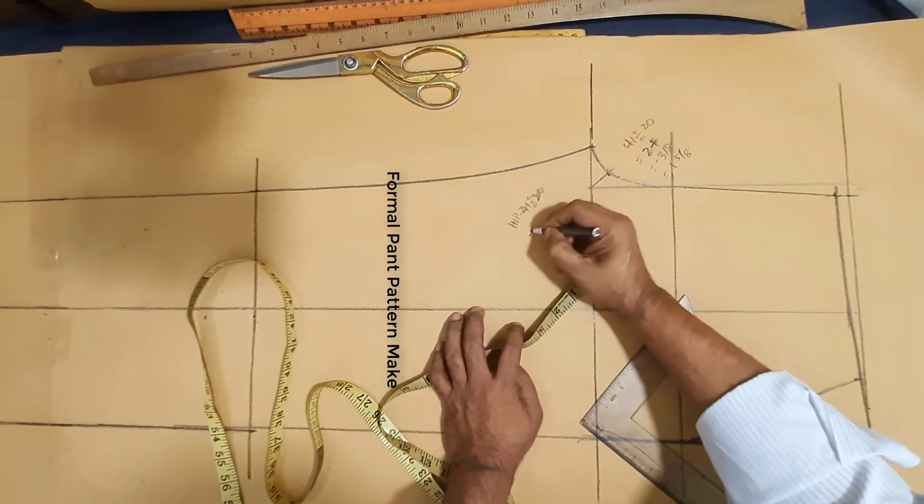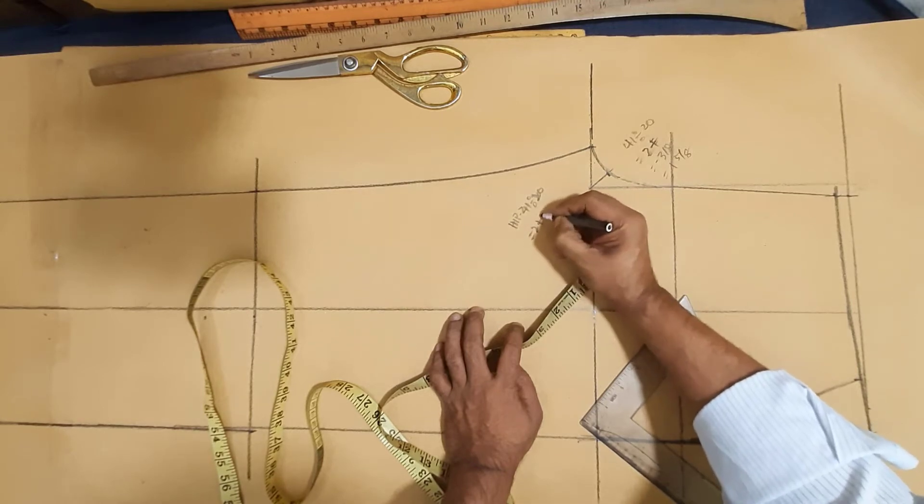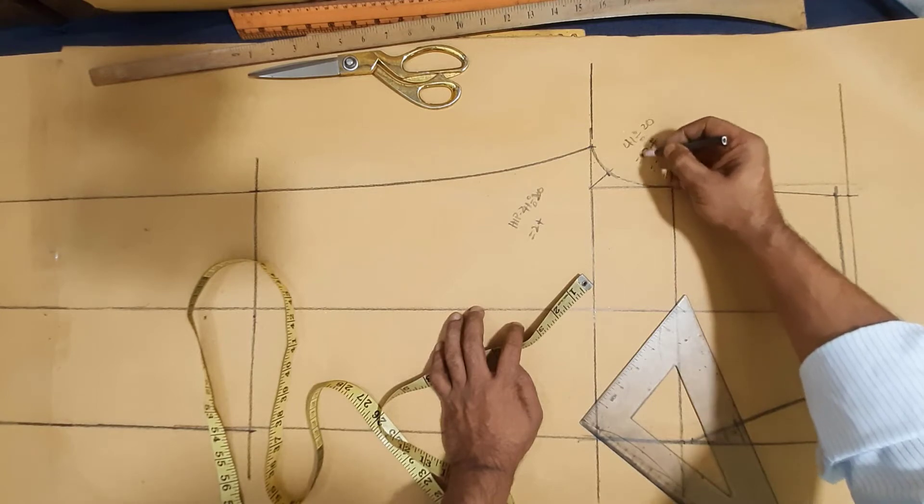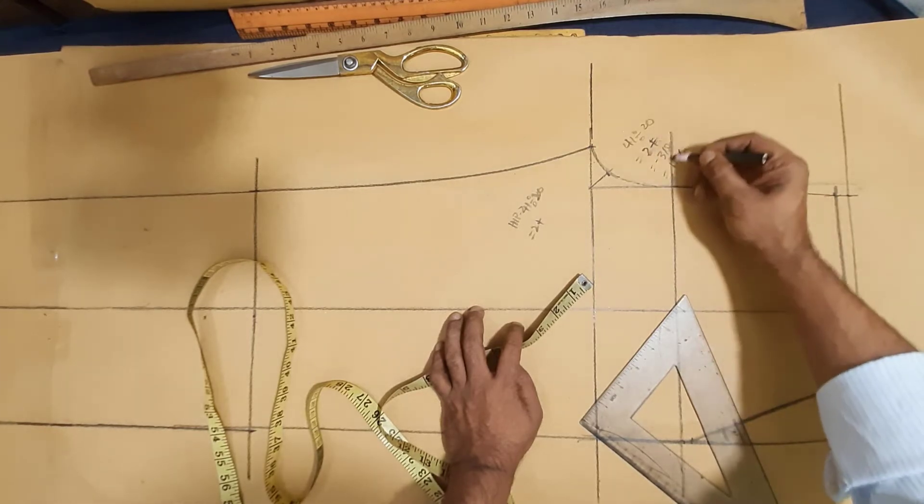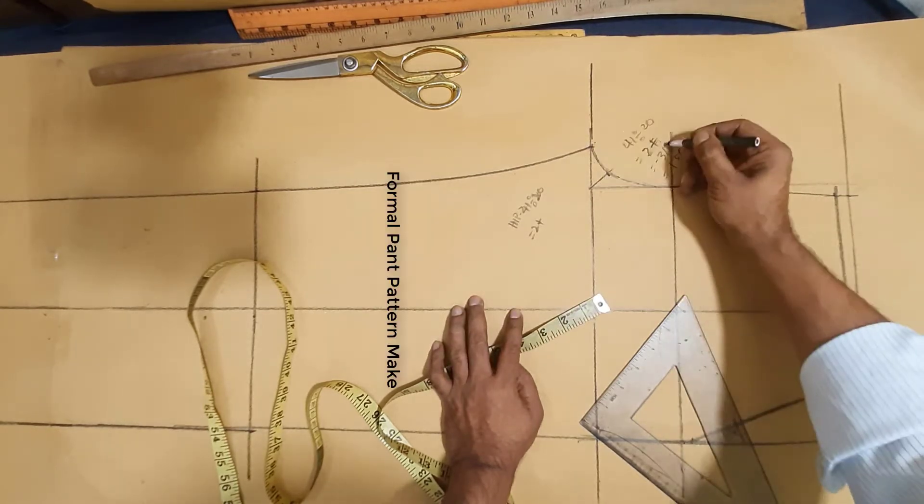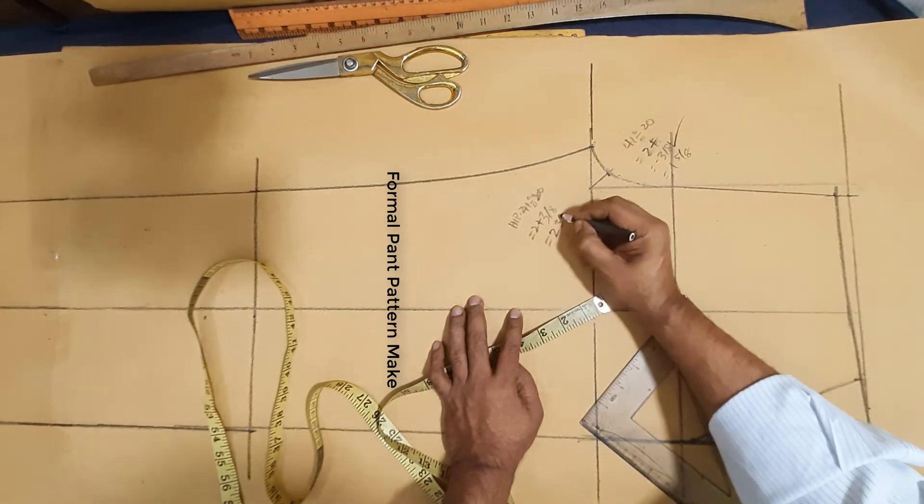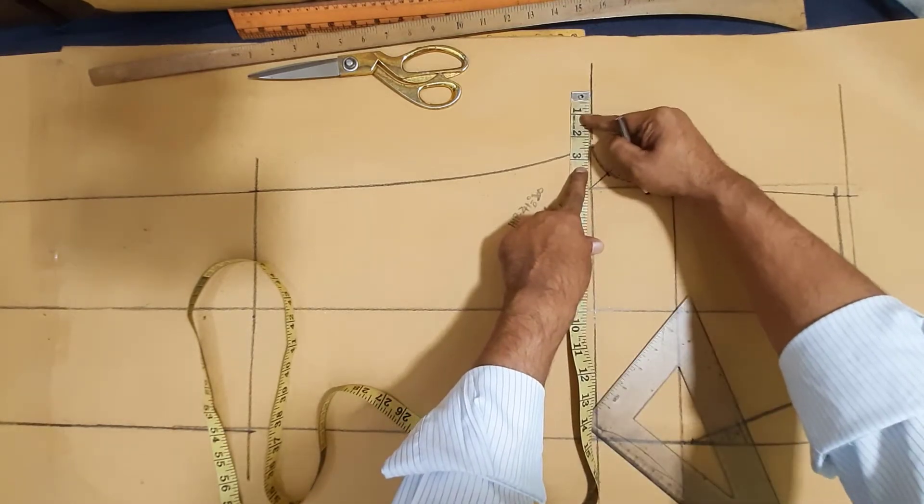Now I have make back cross 41 divided by 20, we got 2 something, plus before I minus 38 from this calculation. Then we got 158 for this front cross width. Now make back cross width, this 38 added for back part, 238 for this back cross width from front cross point.